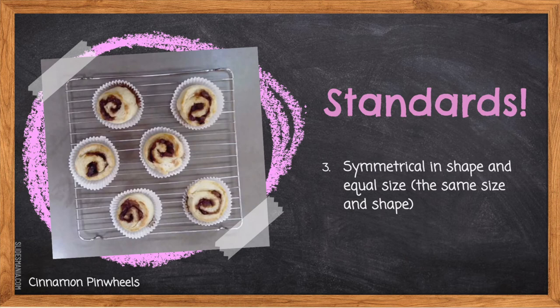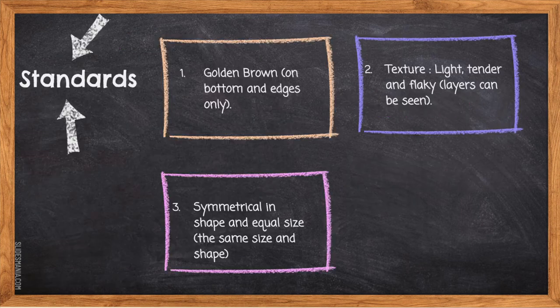Standard 3: Symmetrical in shape and equal size. When looking at all six pinwheels, they should be cut roughly the same, with the same height and a lovely circle shape — meaning you reshaped them with your hands and didn't allow the squished shape from the knife to remain when baking. These are all the standards for the cinnamon pinwheels.